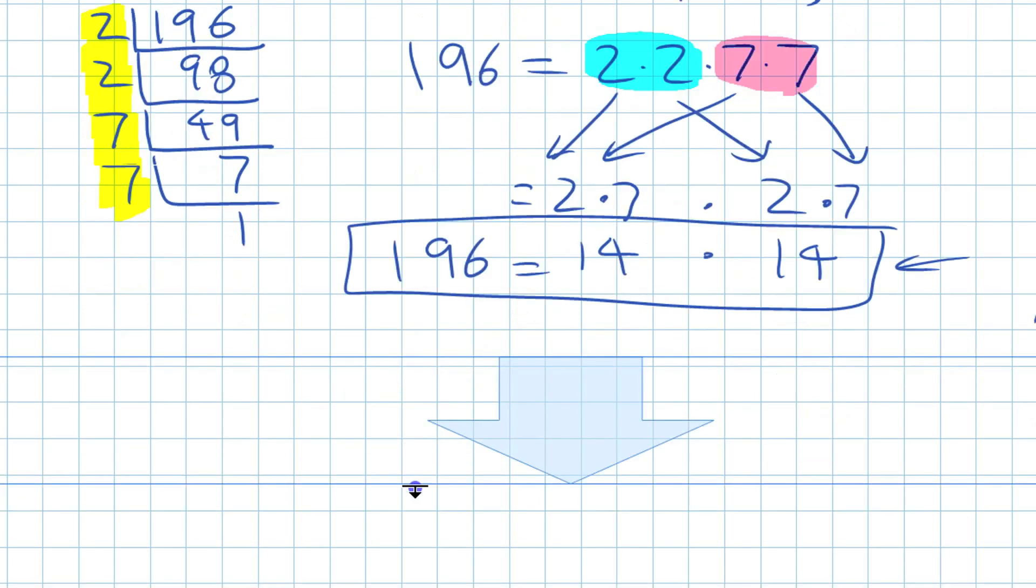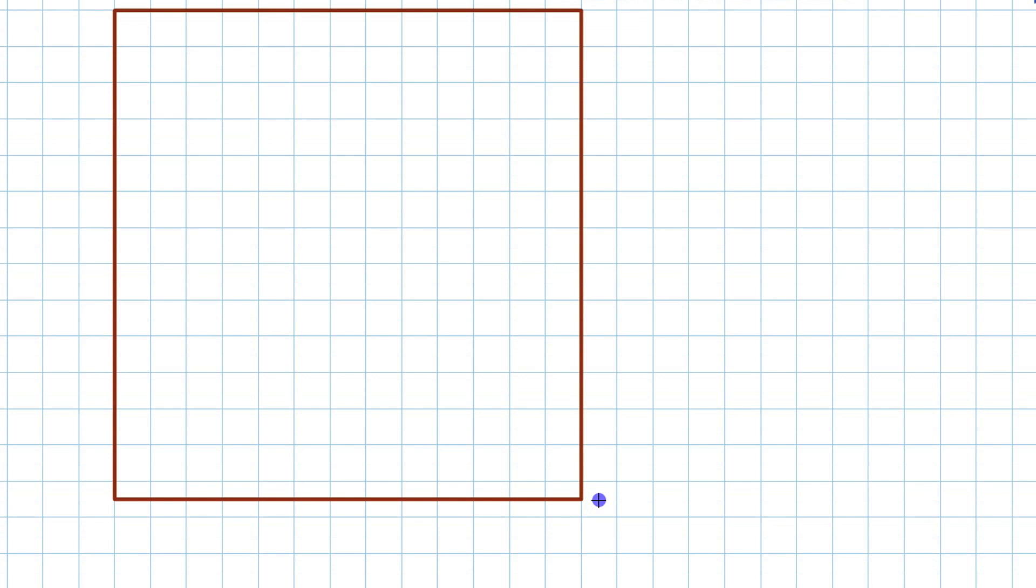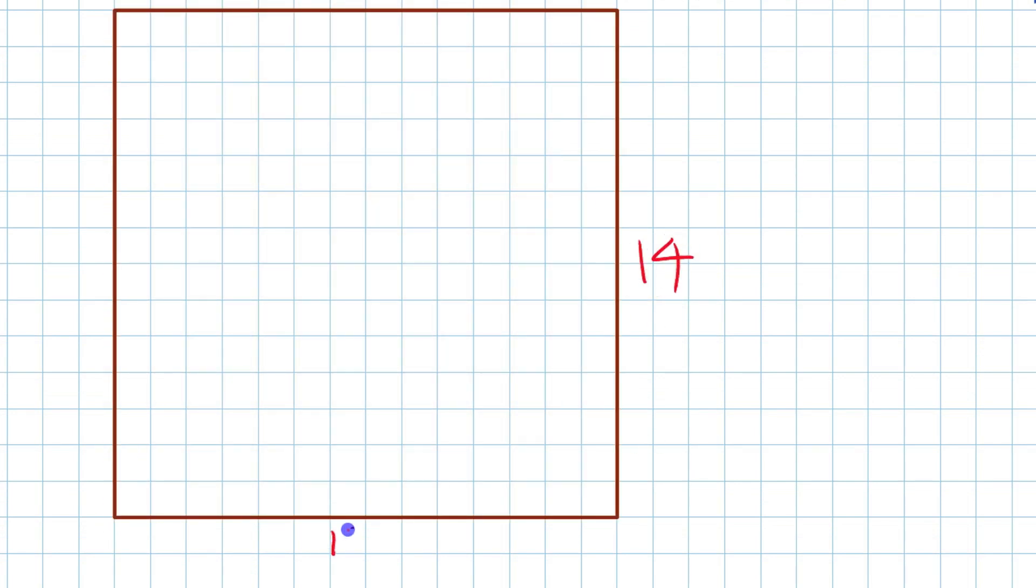If we draw a square that is 196 squares, we have to make it 14 by 14. If we have 14 here and 14 here, let's say those are centimeters. They're probably not centimeters on your screen, but that area in there would be 196 centimeters squared, because 14 squared is 196.